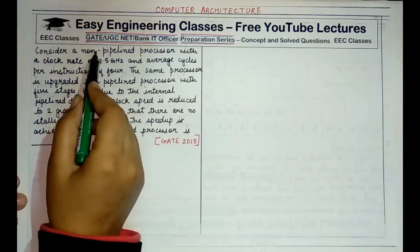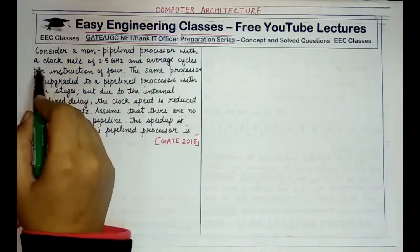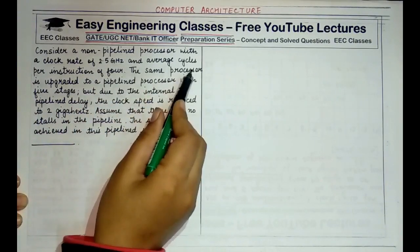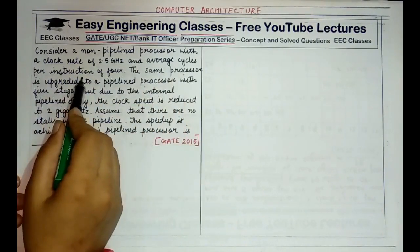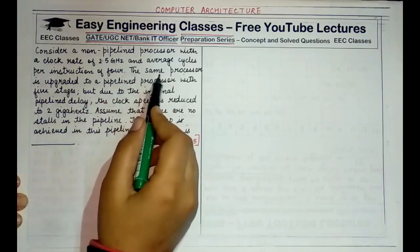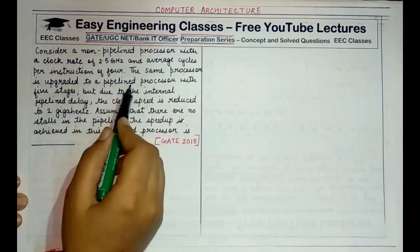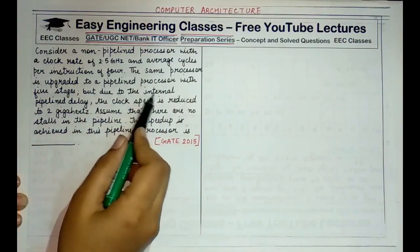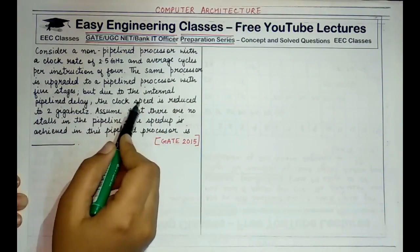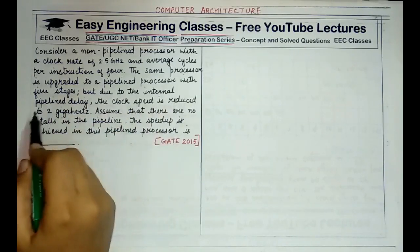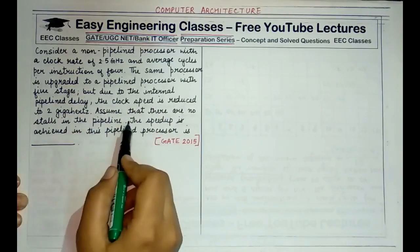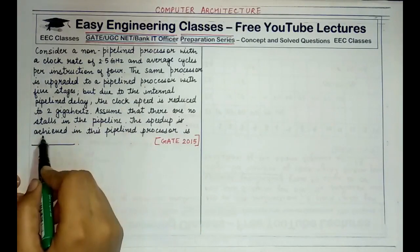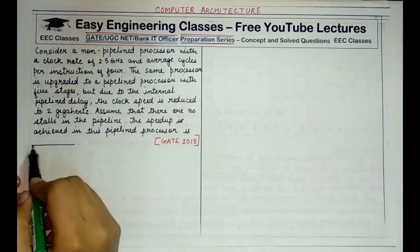Consider a non-pipelined processor with a clock rate of 2.5 GHz and average cycles per instruction of 4. The same processor is upgraded to a pipelined processor with 5 stages, but due to internal pipeline delay, the clock speed is reduced to 2 GHz. Assume that there are no stalls in the pipeline. Find the speedup achieved by this pipelined processor.